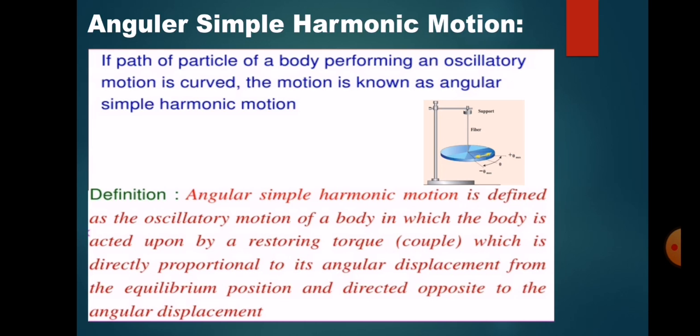If the path of a particle or body performing an oscillatory motion is curved, then the motion is known as angular simple harmonic motion. The example of angular SHM is a torsional pendulum. The example of linear SHM is an oscillating spring with a mass, or a simple pendulum. The diagram shown here is a torsional pendulum. Now we will see the definition of angular simple harmonic motion.